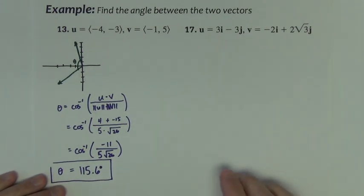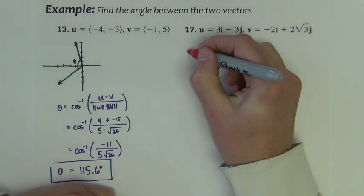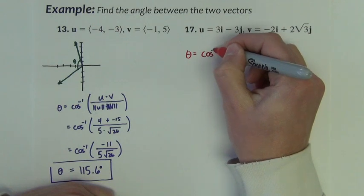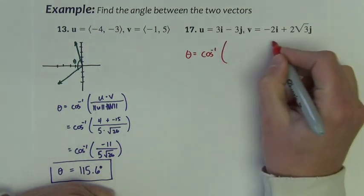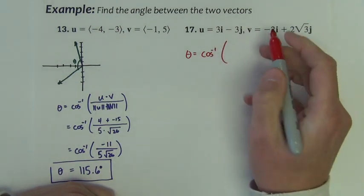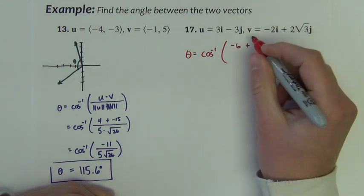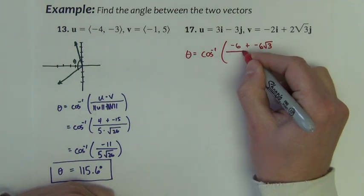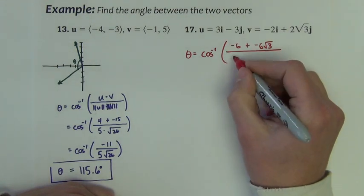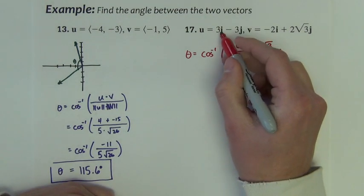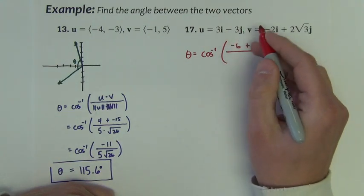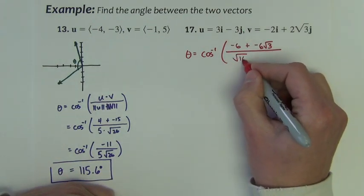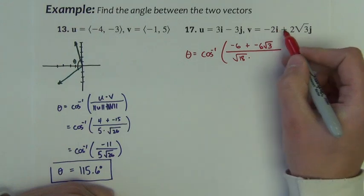Second example, same type of problem. The formula again: cosine inverse of the dot product in the numerator, that is x times x plus y times y, over the magnitude of each vector. This one would be √18. This one would be 4.